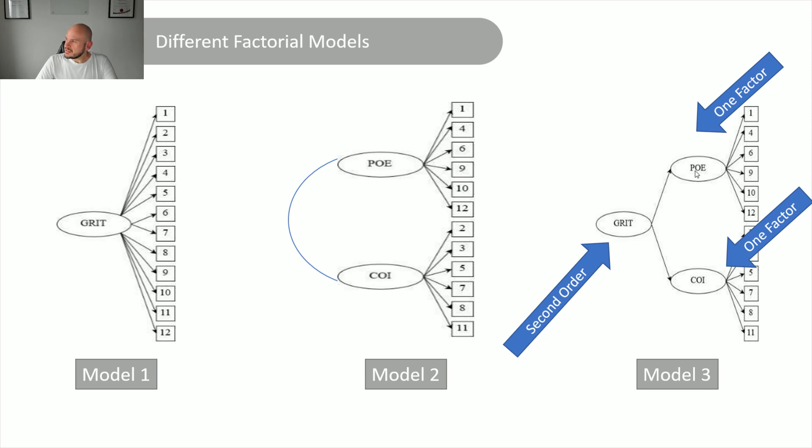where instead of having items load onto a factor that doesn't exist, we've got latent factors making up an item that doesn't exist. So the same principles apply. So here, grit is made up of consistency of interest and perseverance of effort. So this path would be constrained to one, and this path would be allowed to be freely estimated.